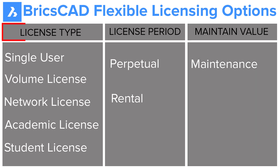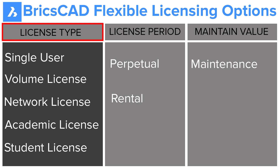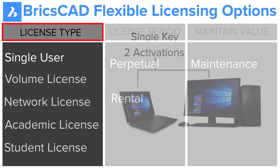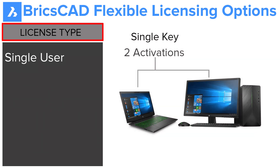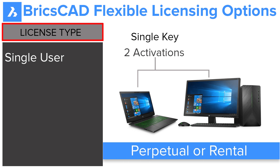In the license type, we have single user, volume, network, academic and student license. In single user, you will get one license key and this key can be activated on two computers — for example, a laptop at your home and a more powerful desktop computer at your office. Single user licensing is available for perpetual or rental licensing.